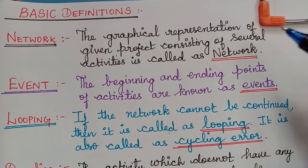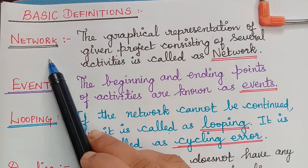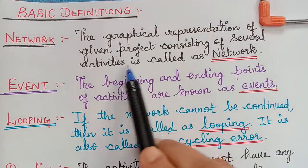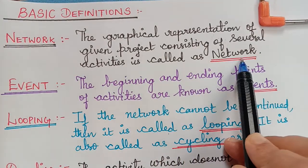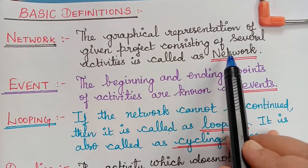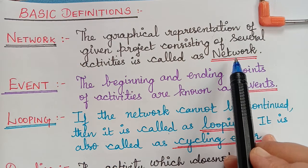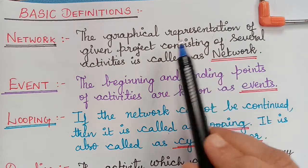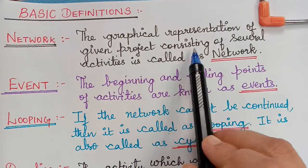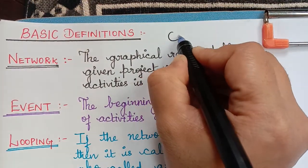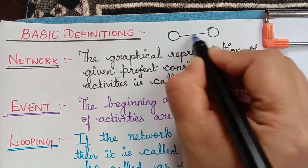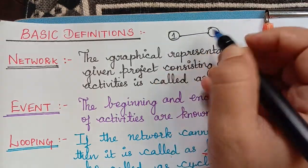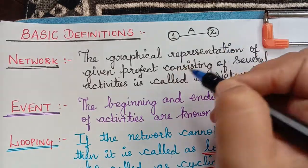Now here we have the basic definitions. The first definition is network. The graphical representation of a given project consisting of several activities is called a network. We are going to consider a project which involves various activities. We will have nodes and using the nodes and lines, we will construct a graphical representation of a given project. We represent the starting and ending nodes and the activity with the help of a line, naming the nodes as node 1 to node 2 where activity A can be carried out.